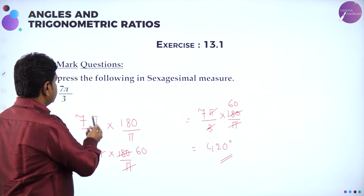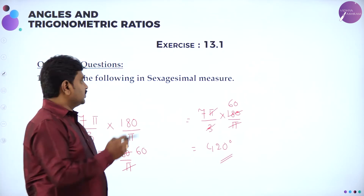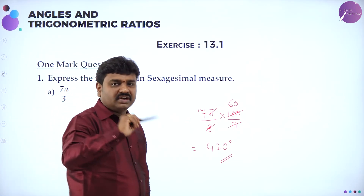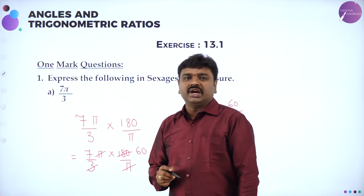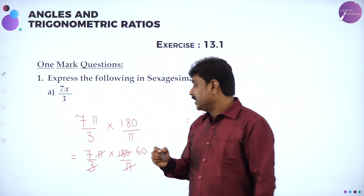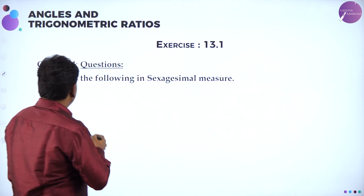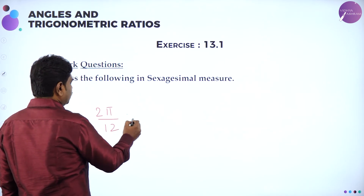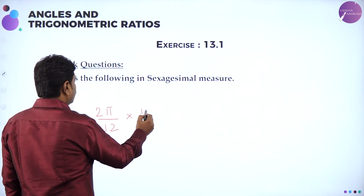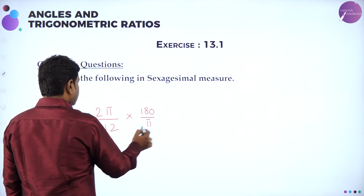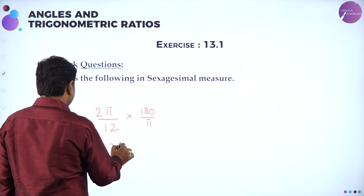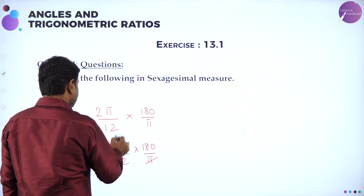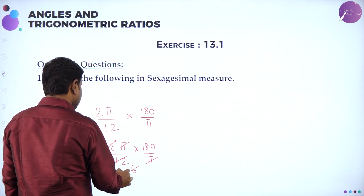Sexagesimal is also called degree representation. They gave the angle in radians and you convert to degree by multiplying by 180/pi. Next question: 2pi/12. Multiply by 180/pi — pi cancels, 2/12 simplifies to 1/6, and 180/6 gives 30. So 2pi/12 equals 30 degrees.